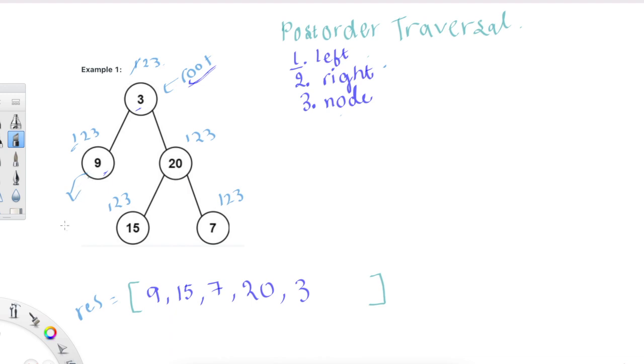And then we are at three's left here which is nine, and then again we go to the left and we are in a situation where there are no more nodes. So we can say that okay, for our base case, if the node we are on is none, then we can return because there is nothing else to do here. So we are going to return to our caller here, nine.